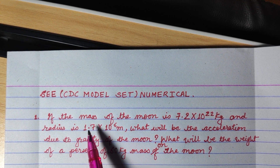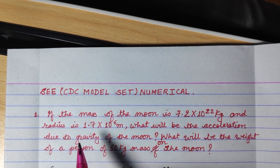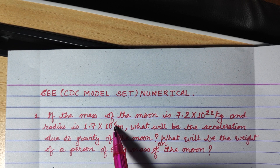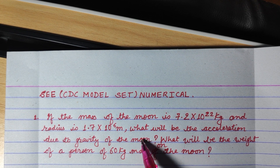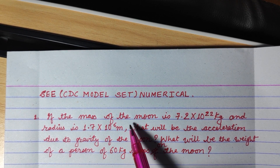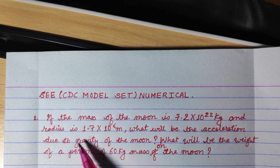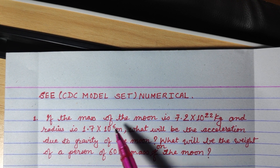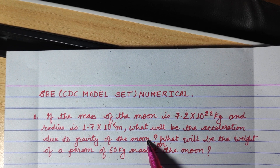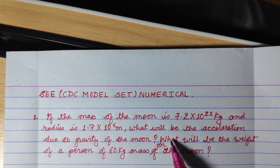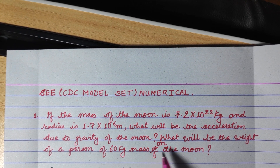If the mass of the moon is 7.2 into 10 to the power 22 kg and radius is 1.7 into 10 to the power 6 meter, what will be the acceleration due to gravity of the moon? In the second part, what will be the weight of a person of 60 kg mass on the moon?